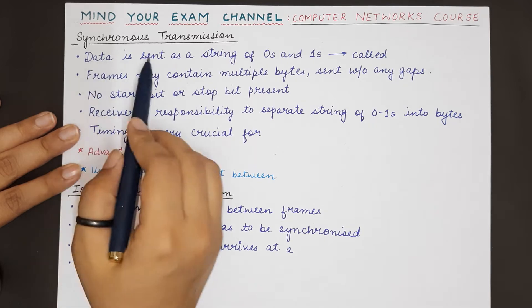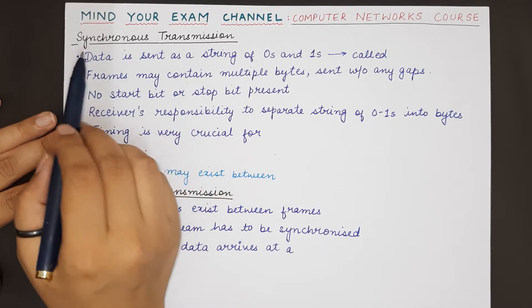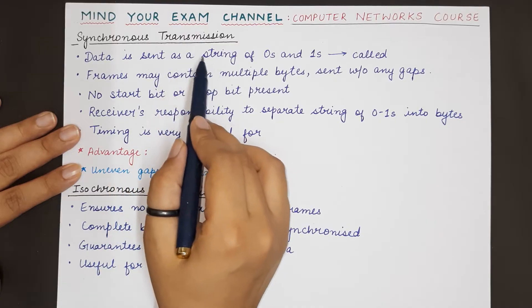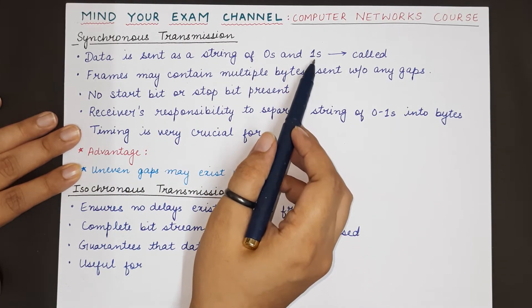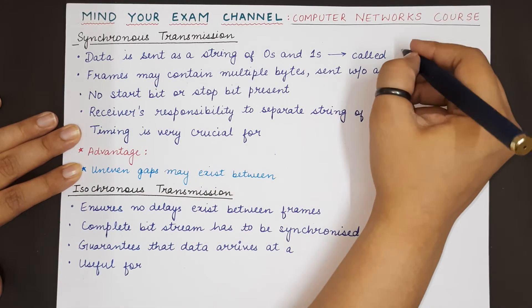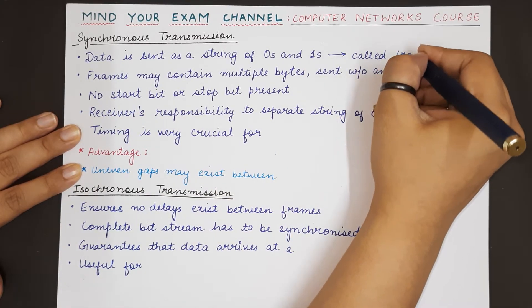In synchronous transmission, the sender sends data as a continuous string of bits—zeros and ones—and this continuous string is known as a frame.